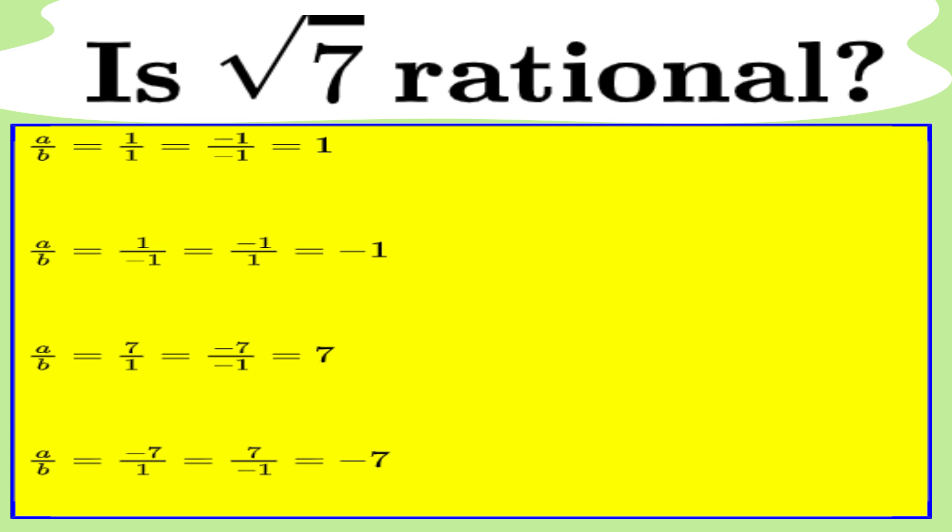Now comes the fun part, testing them. Let's try plugging these potential candidates into our equation and see if any of them work. First, let's try one. If we plug it in, we get 1 squared minus 7 equals minus 6, not 0. Fail. Next, let's try minus 1. Minus 1 squared minus 7 equals minus 6, again, not 0. Fail.